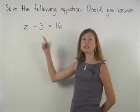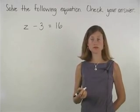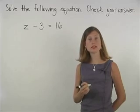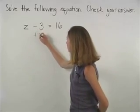To solve for z in this equation, we want to get z by itself on the left side of the equation. Since 3 is being subtracted from z, to get z by itself, we need to add 3 to the left side of the equation.